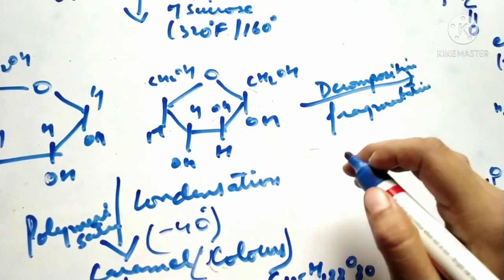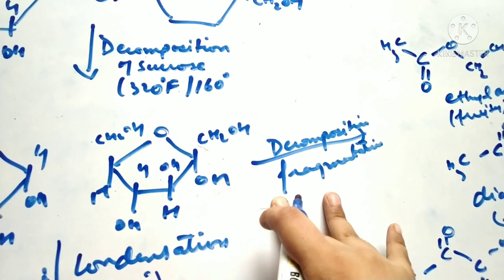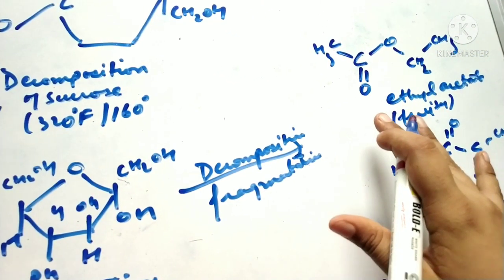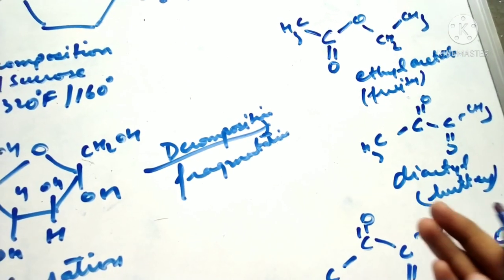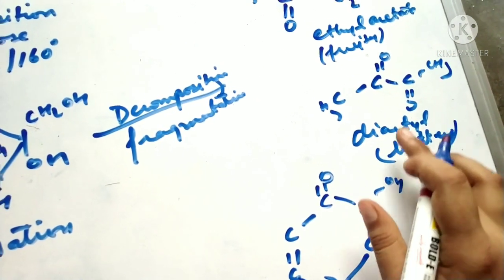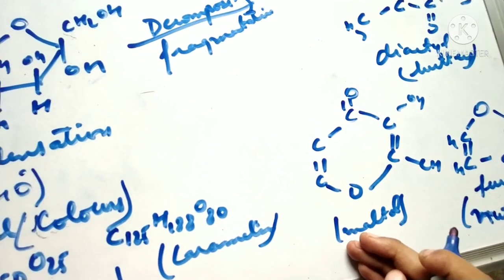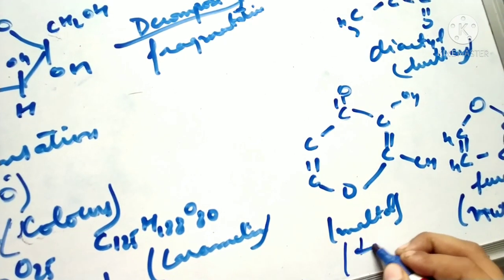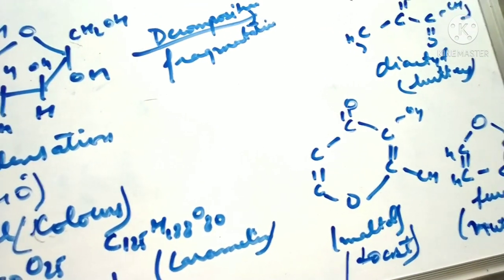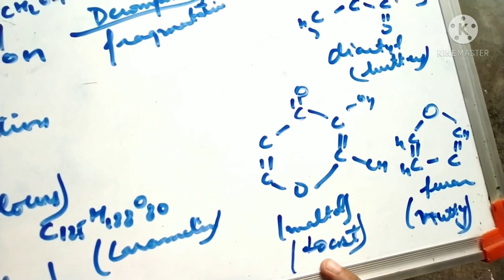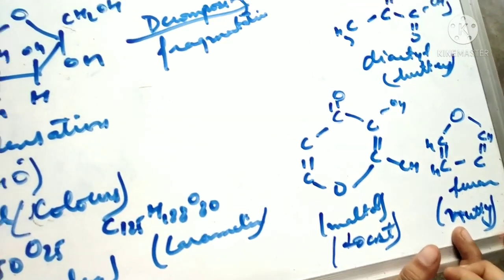When these two monomers are decomposed at very high temperature, they form certain aroma compounds through the process of fragmentation. The compounds formed include ethyl acetate, which is responsible for the fruity smell and fruity aroma; diacetyl, which is responsible for the buttery smell or buttery taste; maltol, which is responsible for the toasty aroma and toasty flavor; and furans, which are responsible for the nutty flavors and nutty smell.